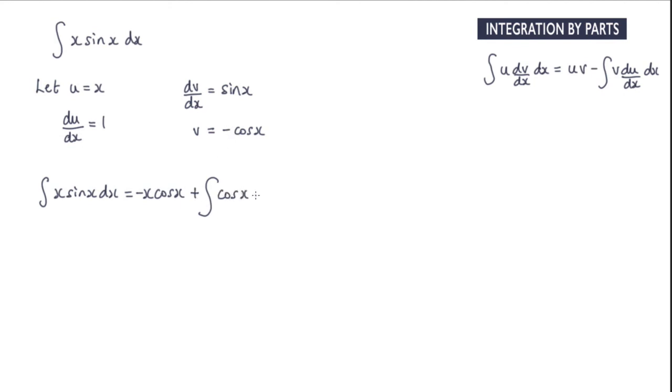And we have cos x and that's multiplied by du by dx and du by dx is just 1. And then we have with respect to x.